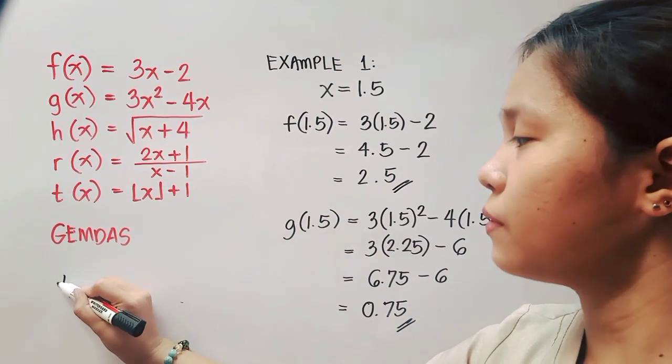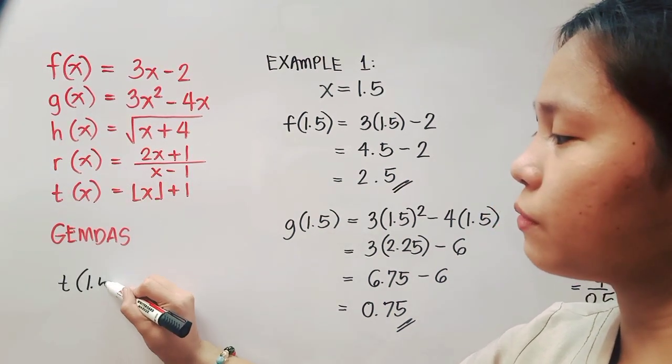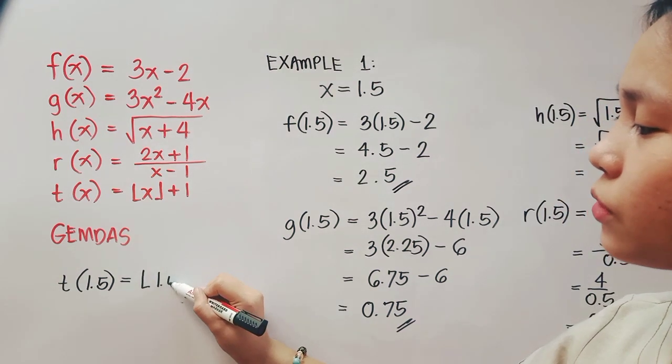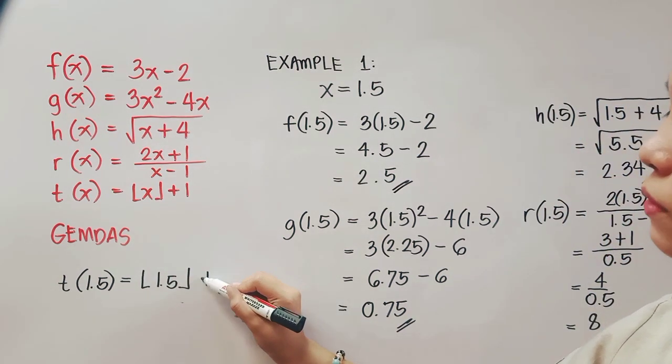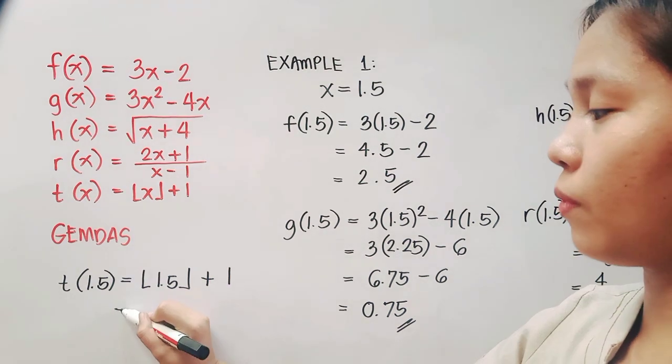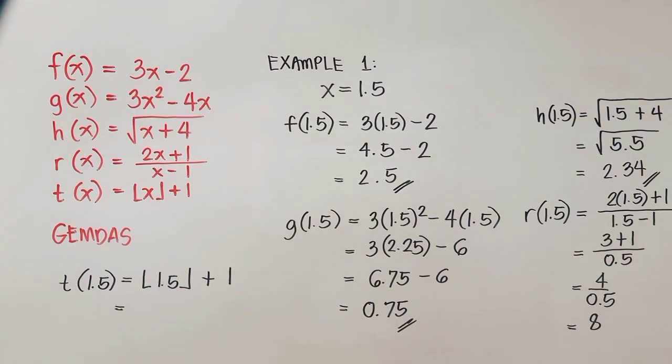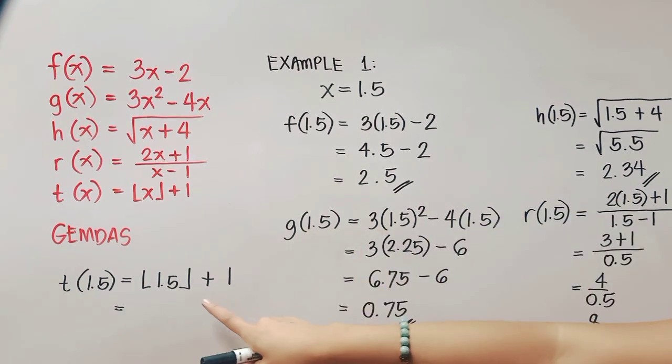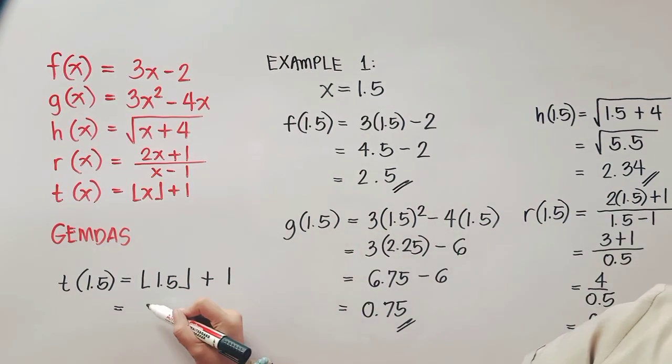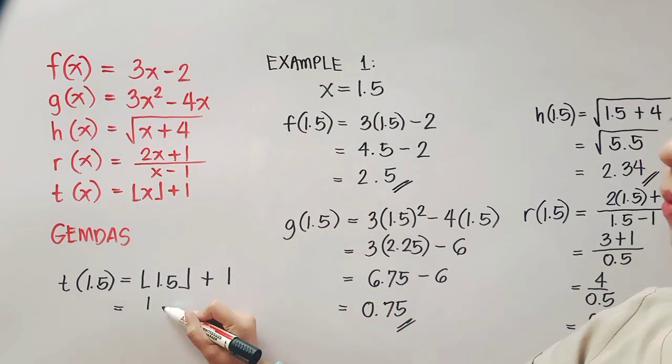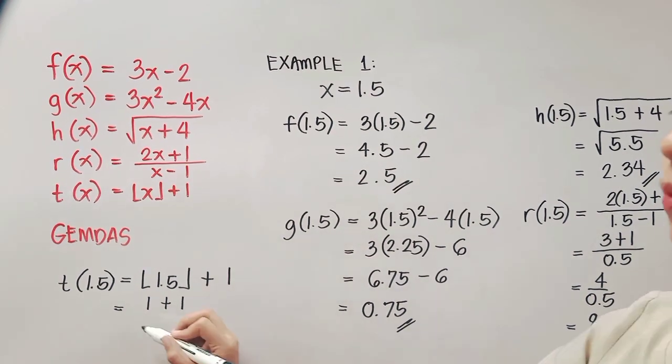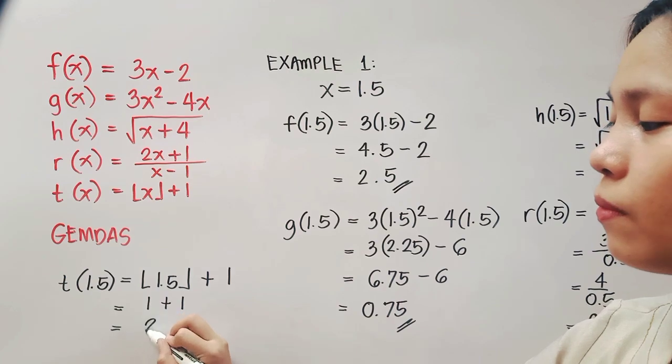Next, we have t of 1.5 is equal to the floor function of 1.5 plus 1. The floor function makes you think of the nearest integer down. So 1.5 goes down to 1, and then copy plus 1. So that will give us a final answer of 2.